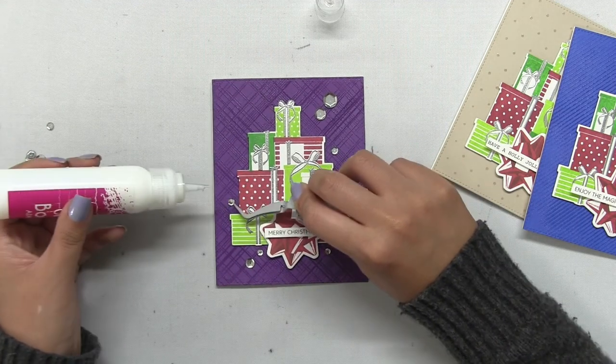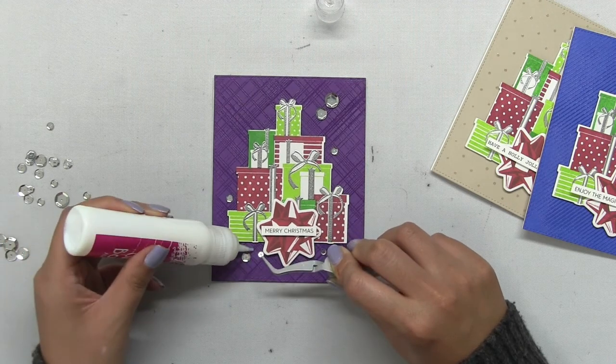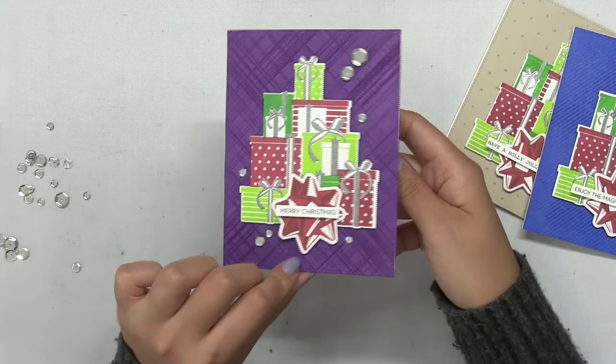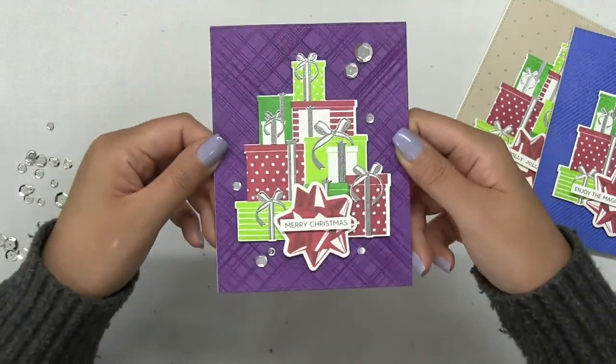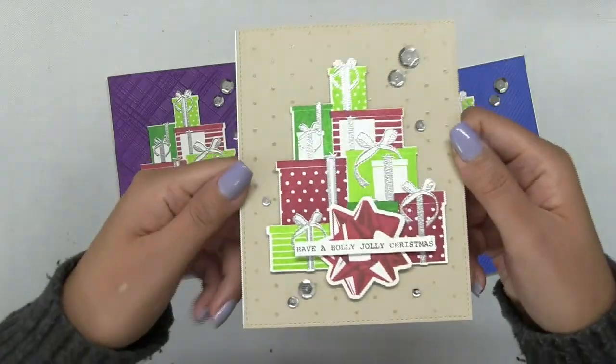Lastly, I added some silver metallic sequins on all three cards, and I adhered them using some Thermoweb Ultra Bond liquid adhesive. Now I have three complete cards that I can give away as a gift as a set, or I can use them to send my holiday cards this year.